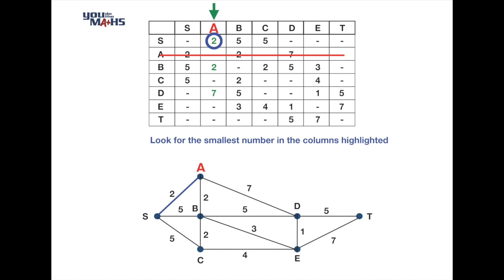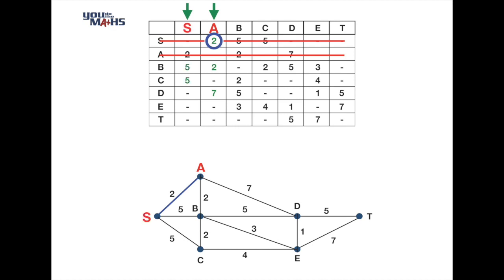Next we look for vertices closest to A and S. In the table we rule out row S and look at the remaining values in columns A and S, searching for the smallest number. The numbers in columns S and A are 5, 5, 2, and 7. The smallest is the 2 connecting vertex A to vertex B — the same result you'd get by inspecting the network diagram directly.